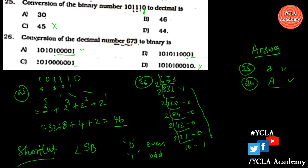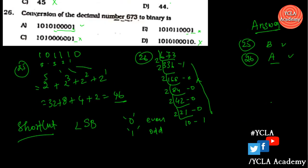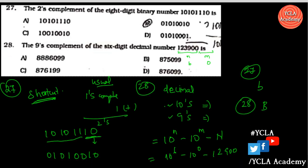If the last bit is 0, the number is even. For example, 46 is even. The number 73 ends in 1, so it is odd. We will cover some of these questions partially. Now we move to the 2's complement of an 8-digit binary number.